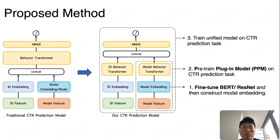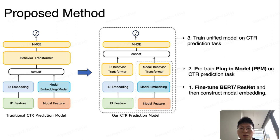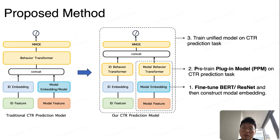In order to introduce powerful multimodal features without a significant increase in computation cost, we split the user behavior modeling layer in the traditional CTR prediction model into ID-based user behavior modeling and modality-based user behavior modeling. This allows us to pre-train the modality-based user behavior modeling with massive cross-domain data to obtain a more powerful user model representation. We only use a subset of parameters of the whole model, which also reduces the computation cost.